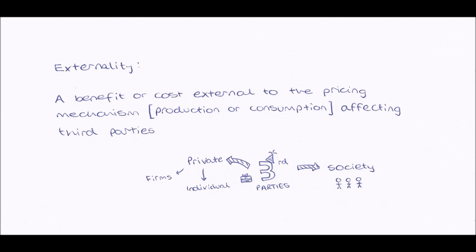So an externality is a benefit or cost, something that's good or bad, external to the pricing mechanism, so it's a knock-on effect of production or consumption which affects third parties, which can either be private firms, private individuals, or society as a whole.